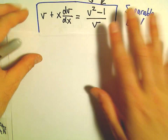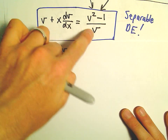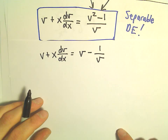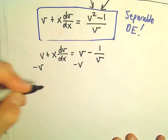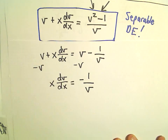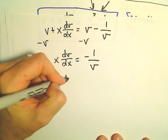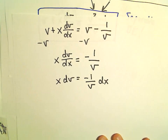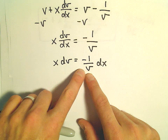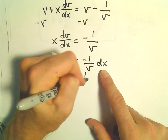Now we solve this separable differential equation. We have v plus x times dv over dx equals v squared minus 1 over v, which simplifies to v minus 1 over v. Subtracting v from both sides, the v's cancel and we get x times dv over dx equals negative 1 over v. Multiplying by dx and by negative v, and dividing by x, we get negative v dv equals 1 over x dx. Now everything is separated.